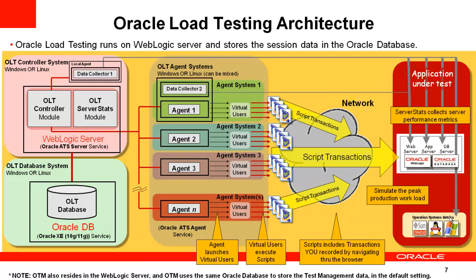When Server Stats monitors are enabled, Oracle Load Testing collects performance metrics from the hardware and software of the application under load. The agent process returns gathered information to the OLT Controller, which stores it in the Oracle database. Application Testing Suite ships with Oracle XE database, but you can also use Oracle Database 10g or 11g Enterprise or Standard Edition for production use. A restricted-use license of Oracle database is included with Application Testing Suite.